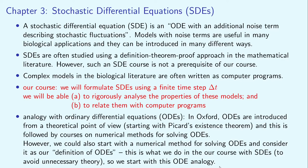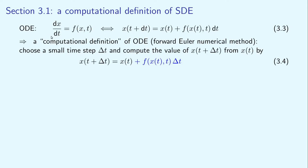So we start with this ODE analogy. Consider a variable x as a function of time which evolves according to an ordinary differential equation. This ODE specifies the infinitesimal change of the x variable in an infinitesimally small time interval of length dt, which can be rewritten as equation 3.3. We choose a small time step delta t and compute the value of x at time t plus delta t from the value of x at time t by this formula. What we have written here is effectively the forward Euler numerical method for solving ordinary differential equations.